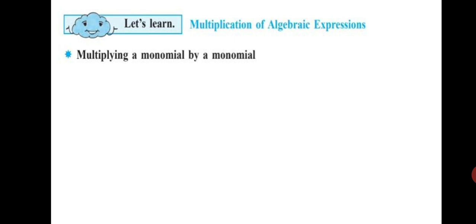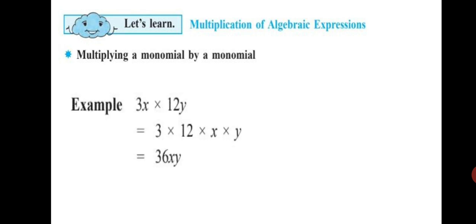First we will learn how to multiply a monomial by a monomial. Let's have a look at an example: 3x into 12y. Here you multiply the coefficients — 3 into 12 is 36 — and then you multiply the variables: x into y is xy. So your final answer is 36xy.